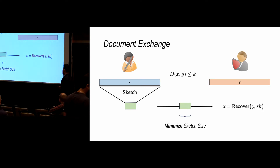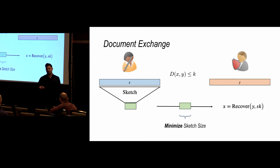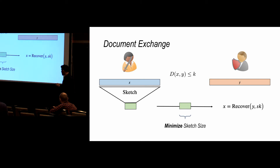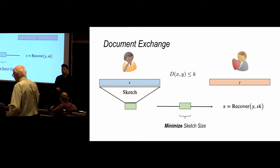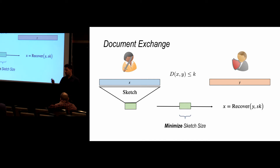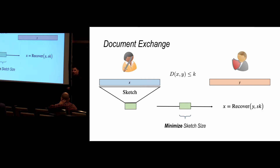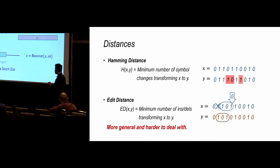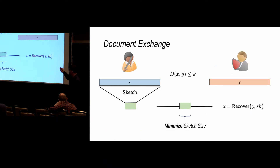The objective is mainly to minimize the sketch size. There are two objectives: we want both the sketching and the recovery procedures to be efficient polynomial time, and we want the sketch to be small — ideally as small as the description of the number of changes. There are two flavors: randomized and deterministic. In the randomized setting, we can use private randomness in sketching and decoding, and we just want recovery to succeed with sufficiently high probability.